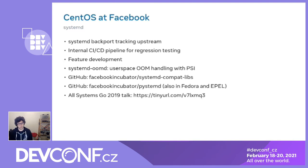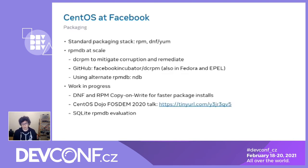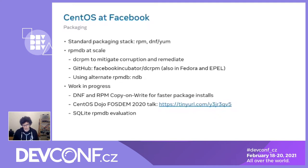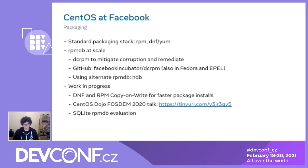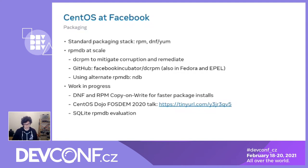A few words about packaging: we use the standard packaging stack — RPM, DNF, and YUM. Because we've been doing this for a while, we've found pretty much anything that can go wrong in the packaging stack. In general, when you're operating a fleet as large as Facebook's, anything that can go wrong will go wrong a lot — even issues that normally manifest in 0.1% of situations end up being a lot of machines you have to deal with.